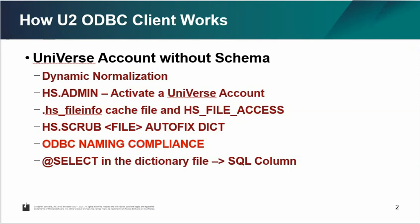If you have a Pick Flavor account and you try to work with ODBC for the first time, you might not see anything. There are a couple of things you need to do to make it available. There are two ways: one is using a schema, but this video focuses on working without a schema using dynamic normalization. You also need to use the HS admin tool to activate your account first.